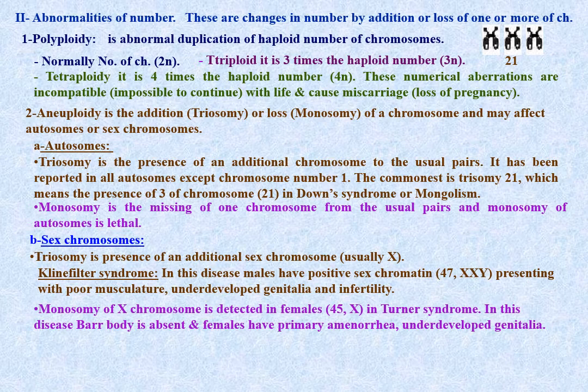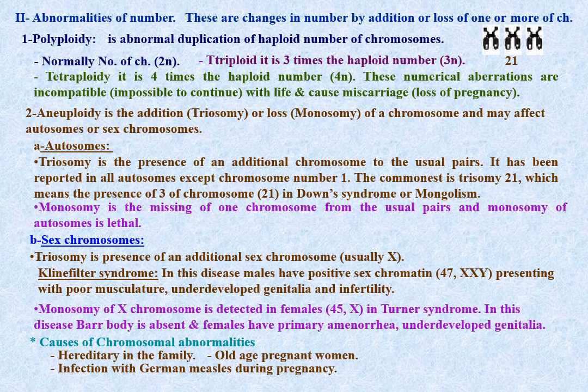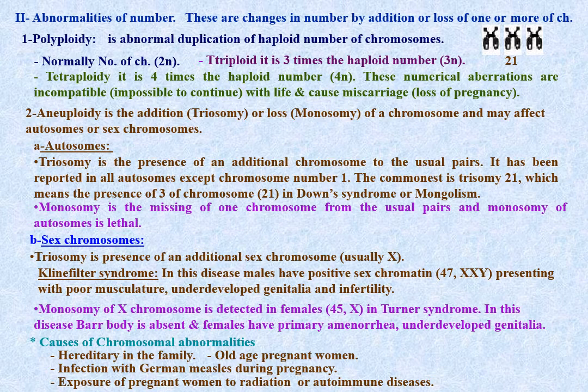In Turner syndrome (45,X), one X chromosome is missing, and the Barr body is absent. The condition is characterized by primary amenorrhea, underdeveloped genitalia and secondary sex characteristics, infertility, along with renal and cardiac abnormalities. Causes of chromosomal abnormalities include hereditary factors, advanced maternal age, infection with German measles during pregnancy, and exposure of pregnant women to radiation or autoimmune diseases.